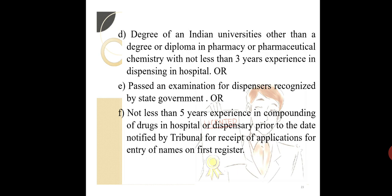There are many people who do not have a degree in pharmacy but are in the profession of pharmacy. For them, different norms apply — for example, 3 years experience in dispensing in a hospital, or 5 years experience in compounding of drugs. A person with this much experience can also apply for registration with the state pharmacy council by showing that they satisfy the prescribed conditions and are eligible to be a registered pharmacist.